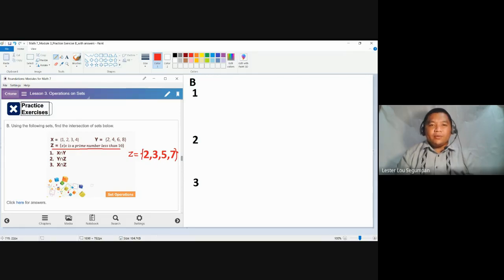Let's proceed to number 1. Number 1 concerns the intersection of sets X and Y. If you say intersection of sets, just like the intersection of roads, it's not the place beside the road. The intersection of roads is the middle part, the common part of both roads.